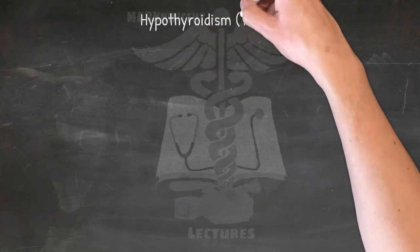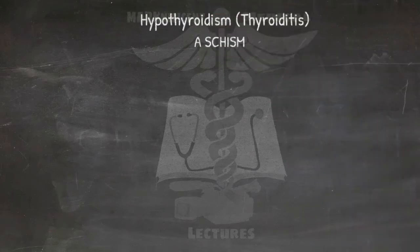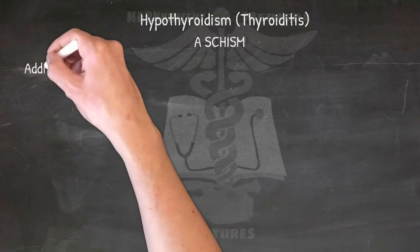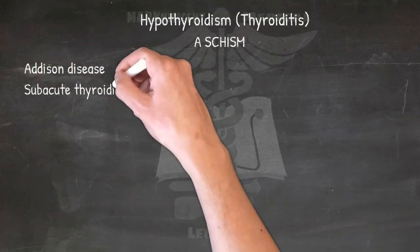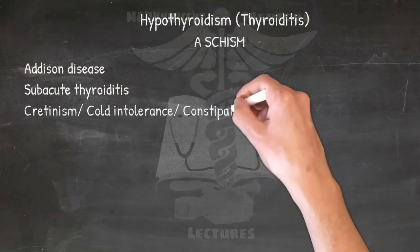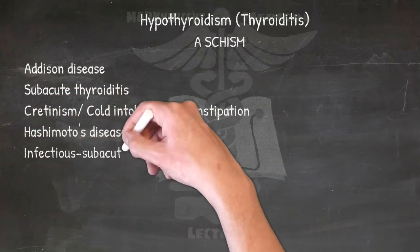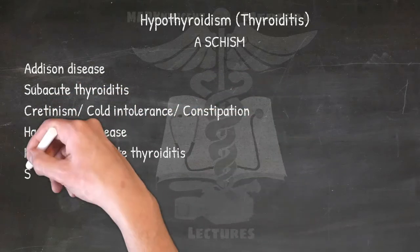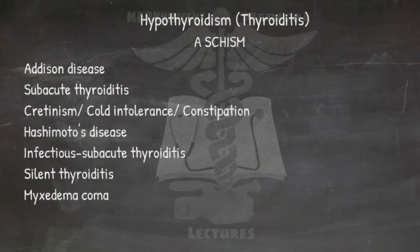Hypothyroidism — thyroiditis: a schism among the axis during World War II. ADDISON: Addison's disease, Subacute thyroiditis, Cretinism, Cold intolerance, Constipation, Hashimoto's disease, Infectious subacute thyroiditis, Silent thyroiditis, and Myxedema coma.